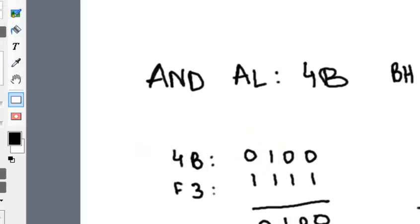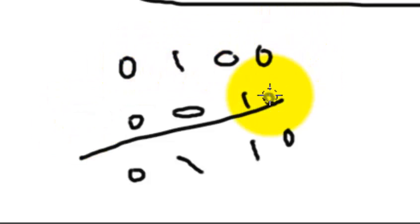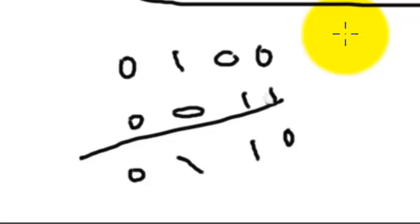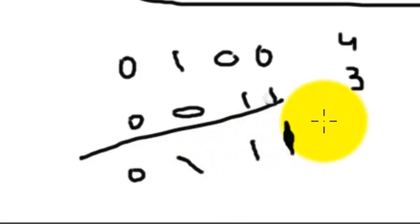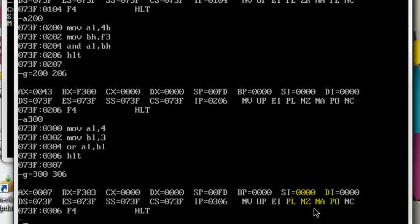Let me show you how it looks on paper. 4 is 0100 and 3 is 0011. In OR, whenever we have 0 and 0 the output is 0, and all the rest are 1s. So the result is 0111, which is 7. As our result is not 0, the zero flag has not been affected, and as we didn't take any carry, the carry flag is also not affected. So this is how we deal with logical operators AND, OR, and XOR using assembly language.